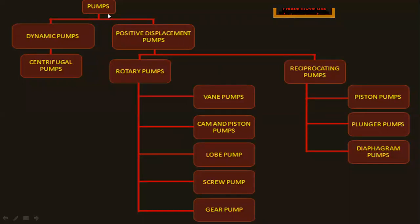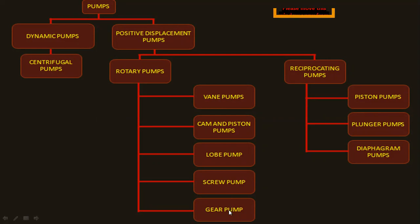Looking at the full classification: we have dynamic pumps, which form into centrifugal pumps, then positive displacement pumps with two main categories — rotary pumps and reciprocating pumps. Reciprocating pumps use piston, plunger, and diaphragm types. Rotary pumps are further classified into vane pumps, cam and piston pumps, lobe pumps, screw pumps, and gear pumps. In industry, centrifugal pumps are used in 90% of applications; piston and reciprocating pumps are used only in very specialized cases.